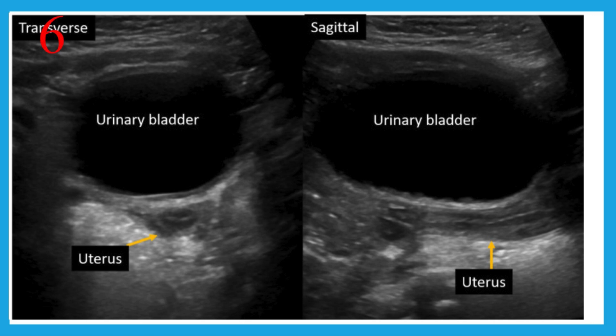Here we are imaging the pelvis of a six-year-old. The normal prepubertal uterus would be tubular in shape, with the cervix wider than the fundus. We would expect one millimeter or no measurable endometrium, no follicles in the ovaries, and the size of the uterus would be less than one centimeter up to six years old.